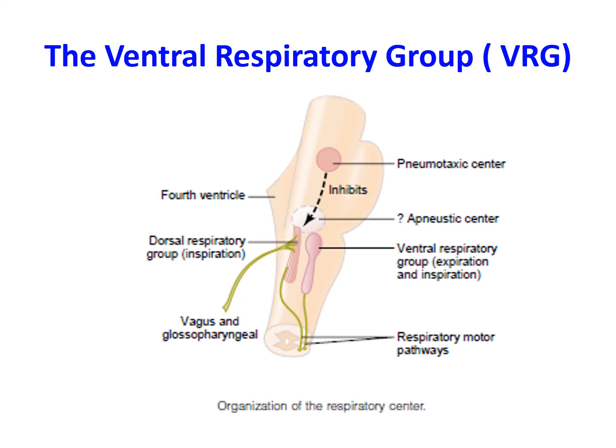The second part of the medullary center is the ventral respiratory group. Its neurons extend most of the length of the ventrolateral aspect of the medulla. It is characterized by having both types of neurons — inspiratory and expiratory. Its fibers are both crossed to the other side and uncrossed to the same side to reach the accessory muscles of breathing. Its neurons have no spontaneous rhythmic discharge during rest, but become active only in forced breathing, such as during muscle exercise.